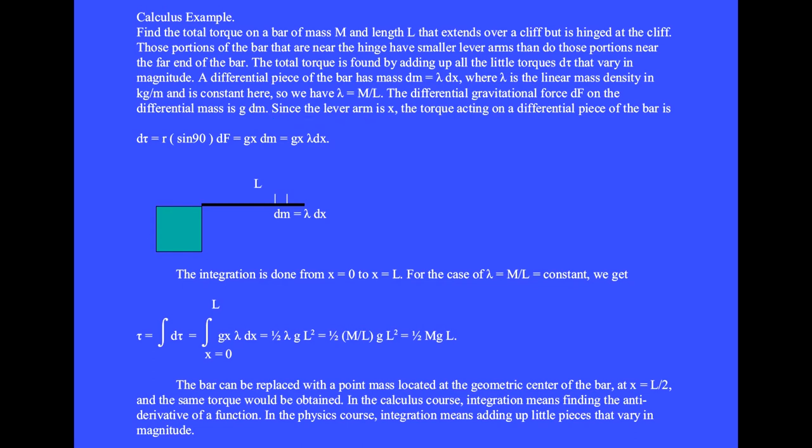Since the lever arm is x, the torque acting on a differential piece of the bar is d tau equals r sin 90 dF equals gx dm, but dm is lambda dx, so we have gx lambda dx.